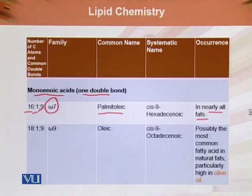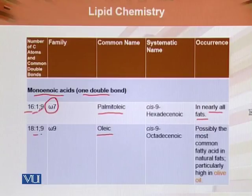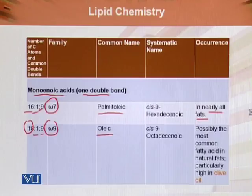The next monoenoic acid is oleic acid, which also has a single double bond at the ninth position, but it is an 18-carbon compound and an omega-9 fatty acid. It is possibly the most common fatty acid in natural fats, particularly in olive oil.